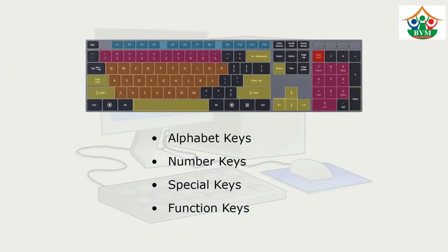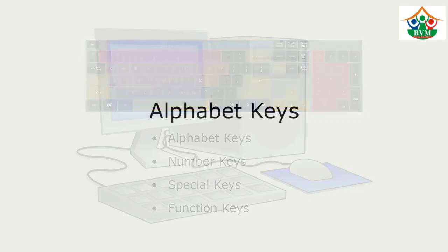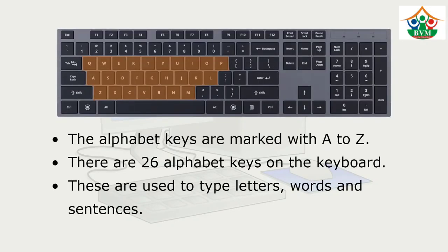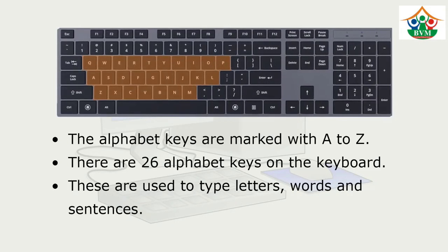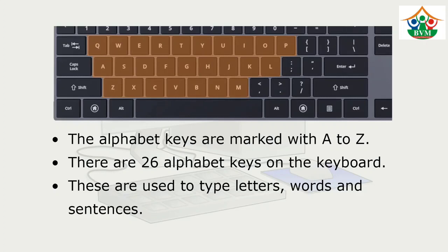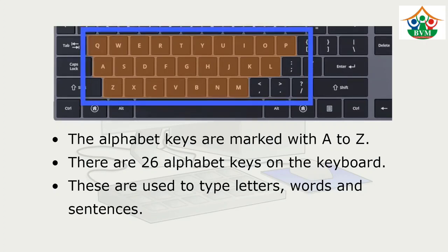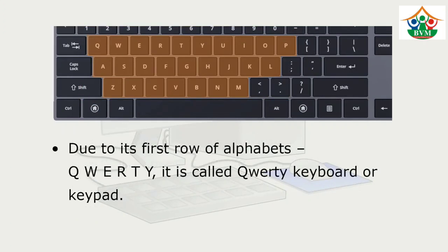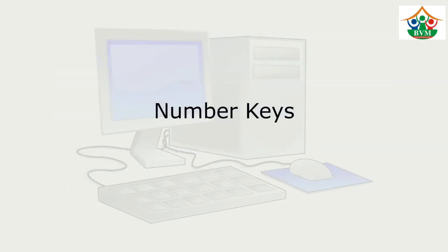There are four types of keys: alphabet keys, number keys, special keys, and function keys. Now we will discuss all types of keys one by one. First is the alphabet key. The alphabet keys are marked with A to Z. There are 26 alphabet keys on the keyboard. These are used to type letters, words, and sentences. Due to its first row of alphabets — Q, W, E, R, T, Y — it is also called the QWERTY keyboard.